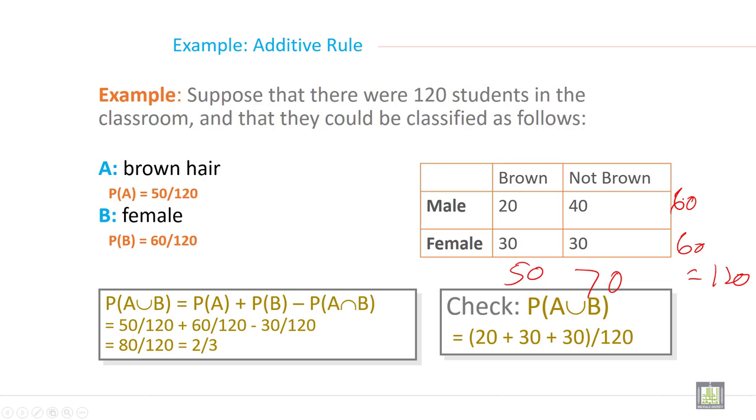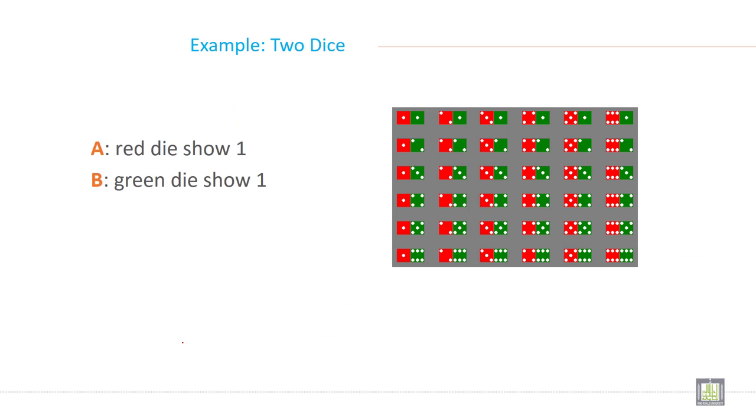So probability of A union B equals probability of A plus probability of B minus probability of A intersection B. So 50 by 120 plus 60 by 120 minus 30 by 120. The intersection is 30 by 120, those who have brown hair and are female. So it equals 80 by 120 or 2 by 3. It is the probability.